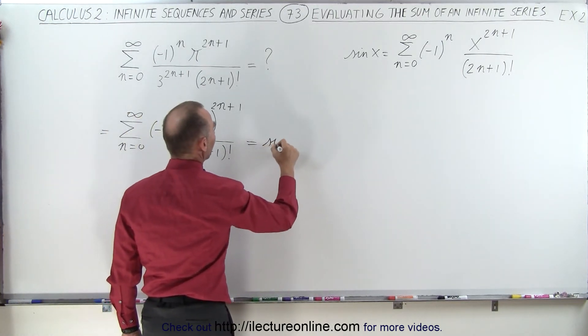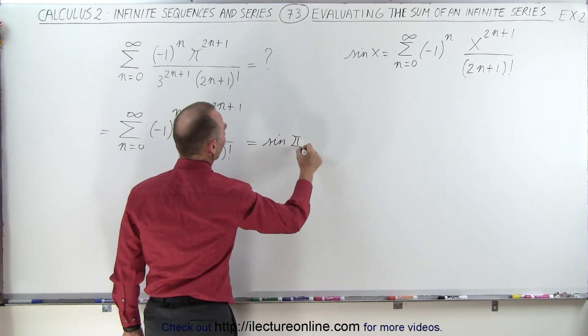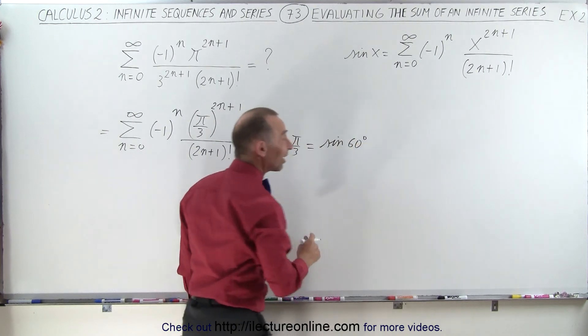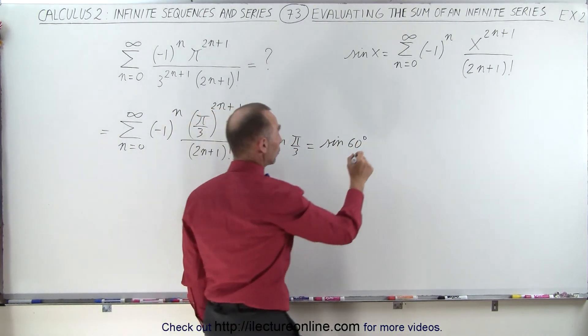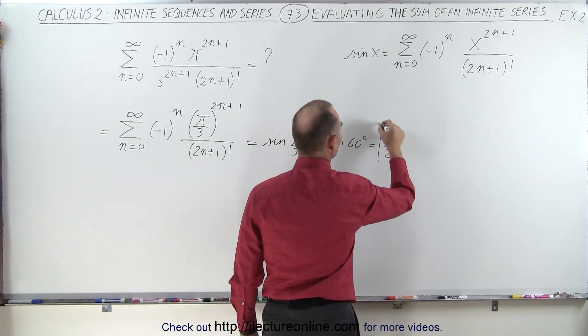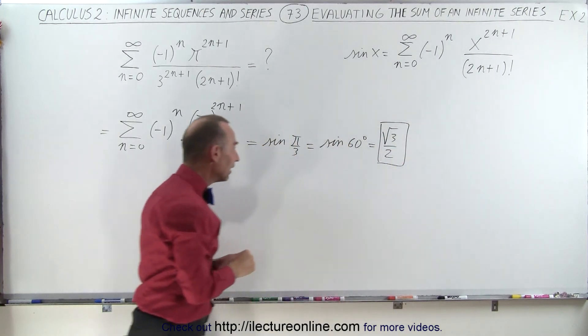So this can be written as the sine of pi over 3, which is equal to the sine of 60 degrees, and the sine of 60 degrees should be equal to the square root of 3 over 2. And so this is what that summation is equal to.